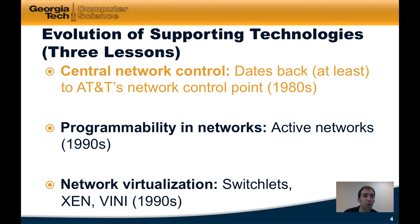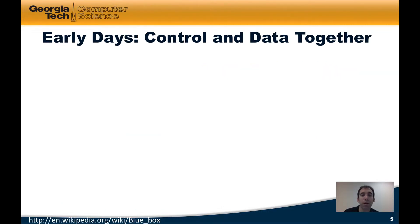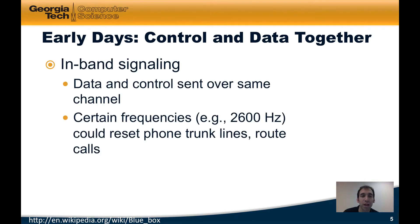Let's start by talking about the origins of central network control. It wasn't always the case that networks had central network control. In particular, in the early days, control and data planes operated together in the same channel. This is a technology or paradigm known as in-band signaling, where data and control — or in the case of the phone network, voice and control — were sent over the same channel.